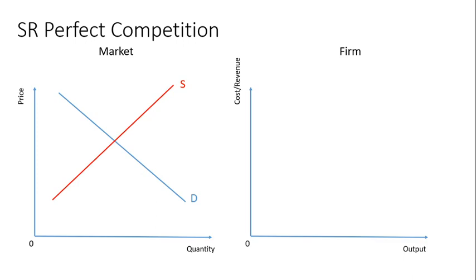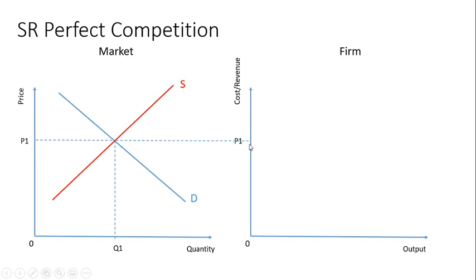Side by side: where is the price determined? We know from year one that price is determined where supply equals demand — that's our market price and market quantity. We're interested in the market price as a firm, and that translates straight over. Whatever the price is in the market is going to be the price for our firm. In a perfectly competitive market, the demand curve is perfectly elastic, so at the price level we have AR equals MR. Demand is AR, and if it's a horizontal line, then AR equals MR.